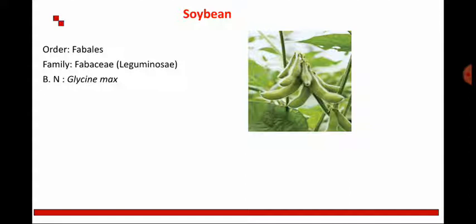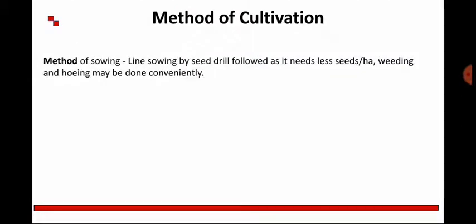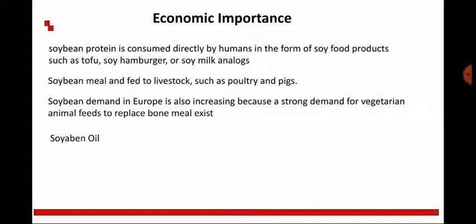The next legume is Soybean, belonging to the family Fabaceae with the botanical name Glycine max. You can see the different cultivation methods for soybean as discussed earlier. The economic importance of soybean: it contains proteins and is consumed directly by humans in the form of soy products or soy milk. Soybean meal is also fed to livestock such as poultry and pigs. Demand for soybean in Europe has also increased due to strong demand for vegetarian animal food to replace bone meal.